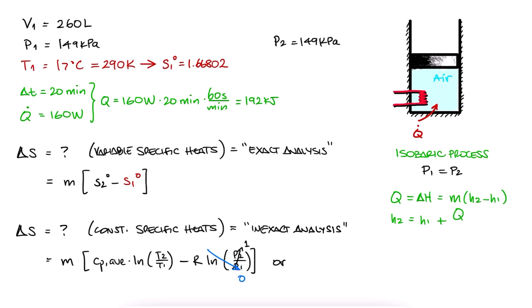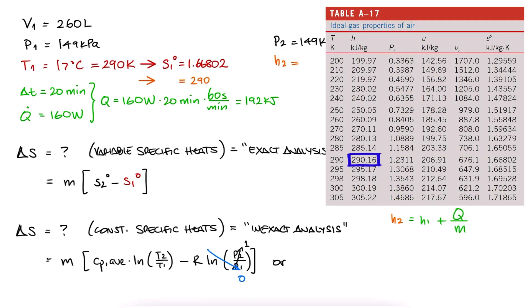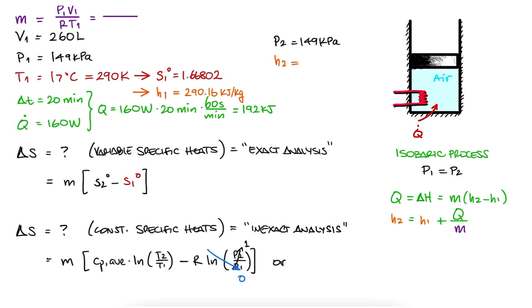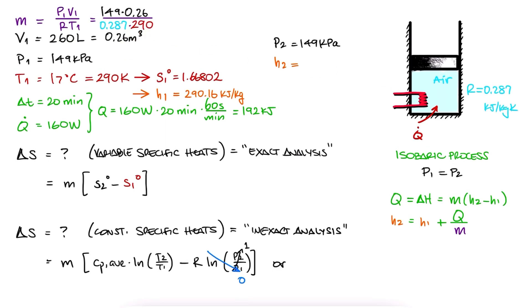So to solve for H2, we need to look up the enthalpy for T1, which is H1, and also calculate the mass. To calculate the mass, we can use the ideal gas equation. We substitute the values and find M, and with it, we can find the specific enthalpy of state 2, H2.